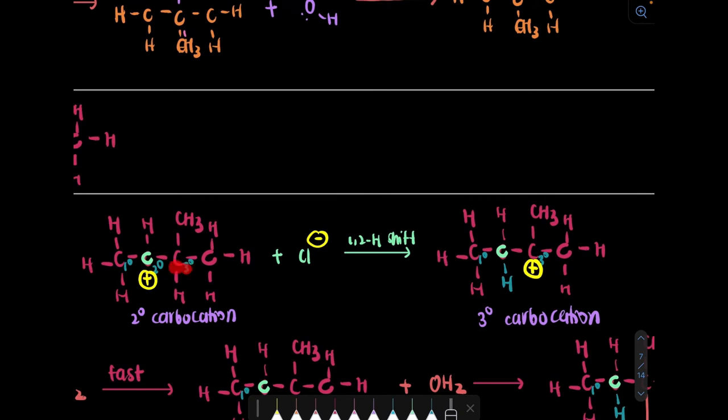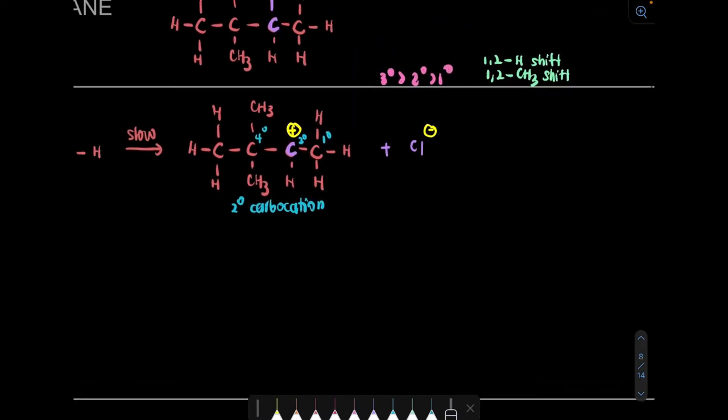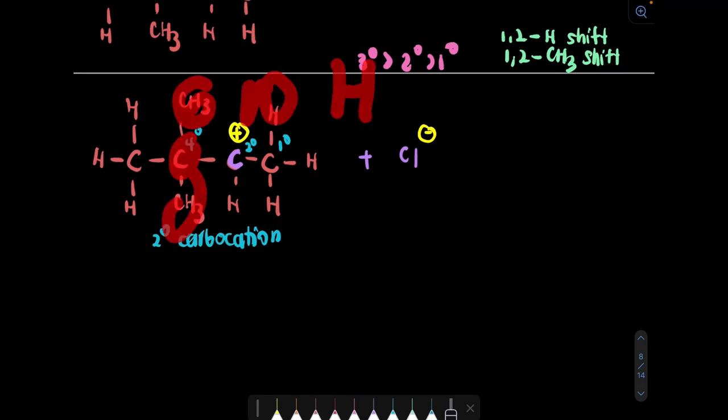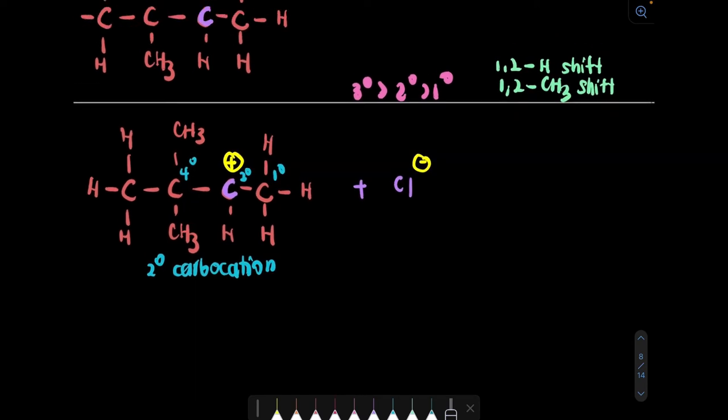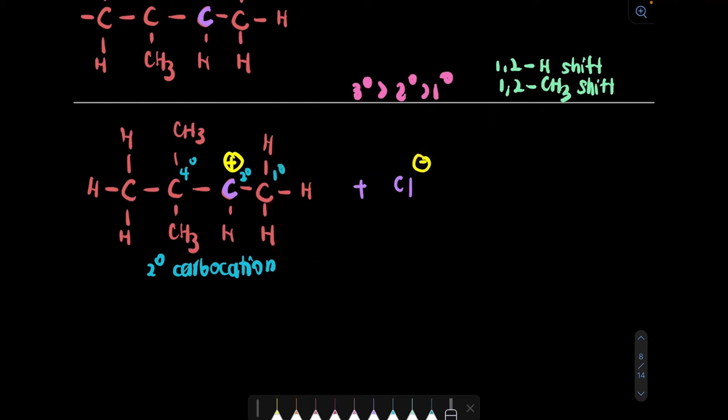We will shift the carbocation ion, the positive charge, with the methyl. For the previous example, like example B, why did we do 1,2-hydride shift instead of CH3 shift? Because there we had hydrogen and CH3. When we have two choices, we will choose hydride. But for this case, we only have CH3, we don't have hydrogen to shift. That's why we're going to take 1,2-CH3 shift. If we do hydride shift, it will become primary carbocation so we don't want that.